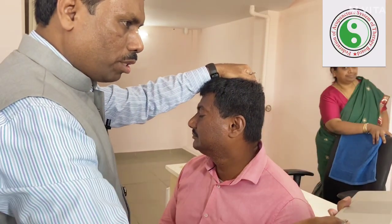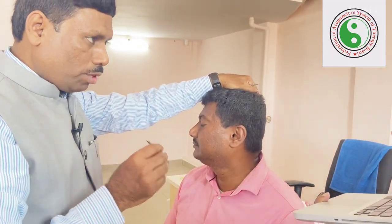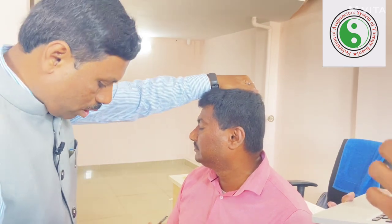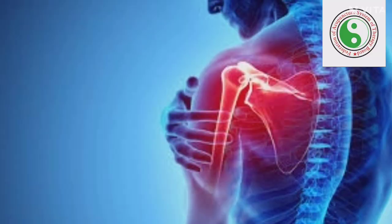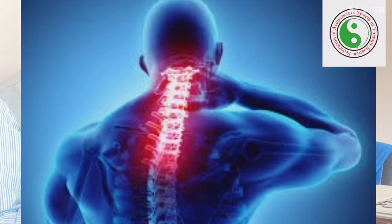Now we are talking about the scapha, indicating that all upper extremities can be covered by activating this particular region. The patient is complaining about shoulder pain, clavicle pain, neck pain, back pain, knee pain, and so on. We try to understand about the upper extremities, especially elbow pain and wrist pain.